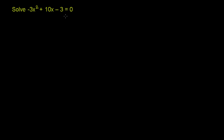We're asked to solve the quadratic equation: negative 3x squared plus 10x minus 3 is equal to 0. It's already written in standard form, and there are many ways to solve this, but in particular, I'll solve it using the quadratic formula.